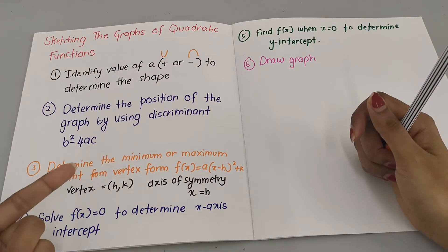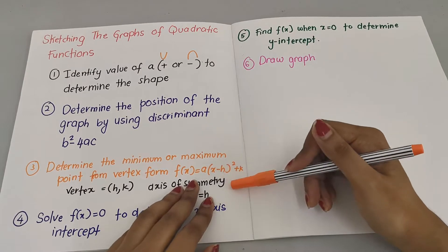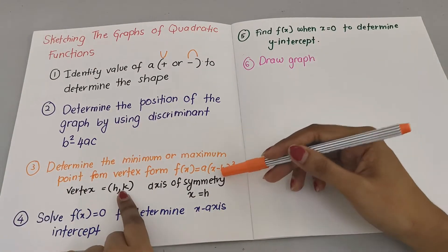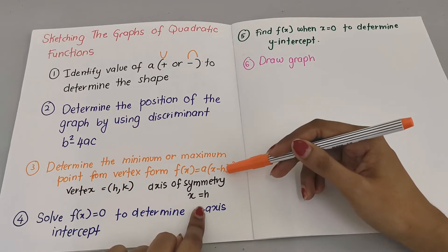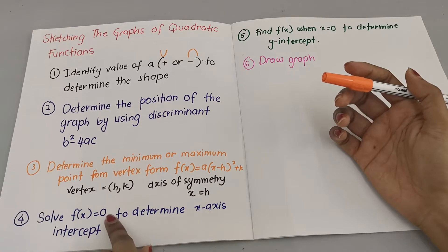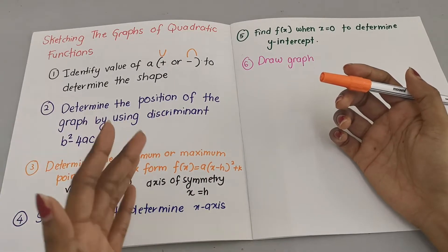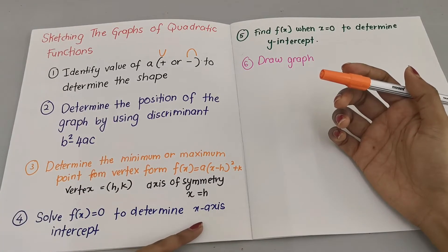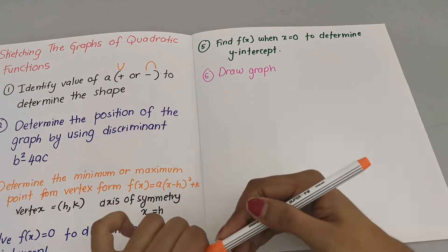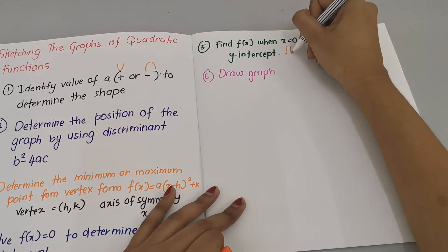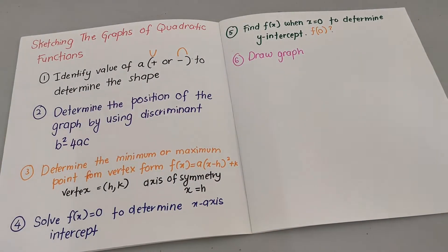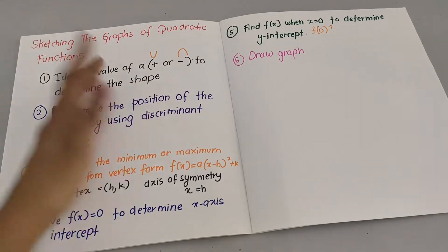The third step is to find whether it's a maximum or minimum point by using the vertex form of the quadratic function. You have to convert from general form to vertex form — the point will be (h, k) and the axis of symmetry will be x = h. The fourth step is to solve f(x) = 0 to find the x-axis intercepts. The fifth step is to find f(0) — when x equals zero — so that you know the y-intercept. Once you have all of this, you can immediately start drawing your graph.